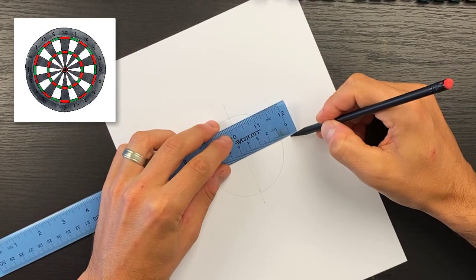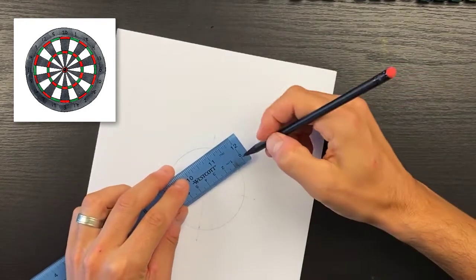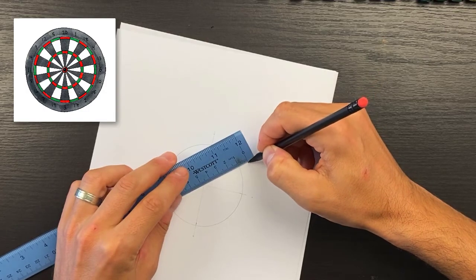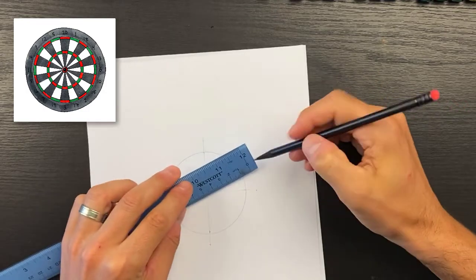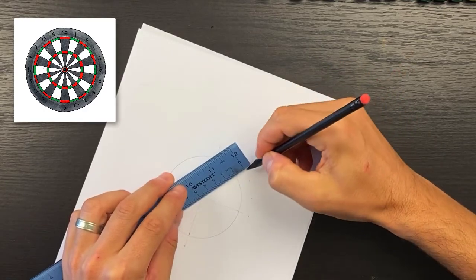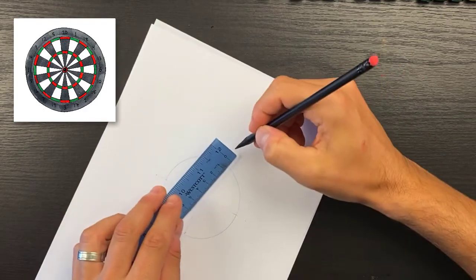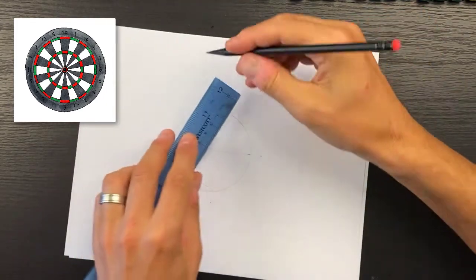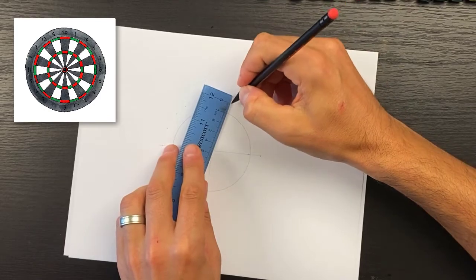If you want, you can go around your circle and add centimeters to kind of help you with little guidelines for the location. I'll go all the way around the circle and we'll connect all those points.